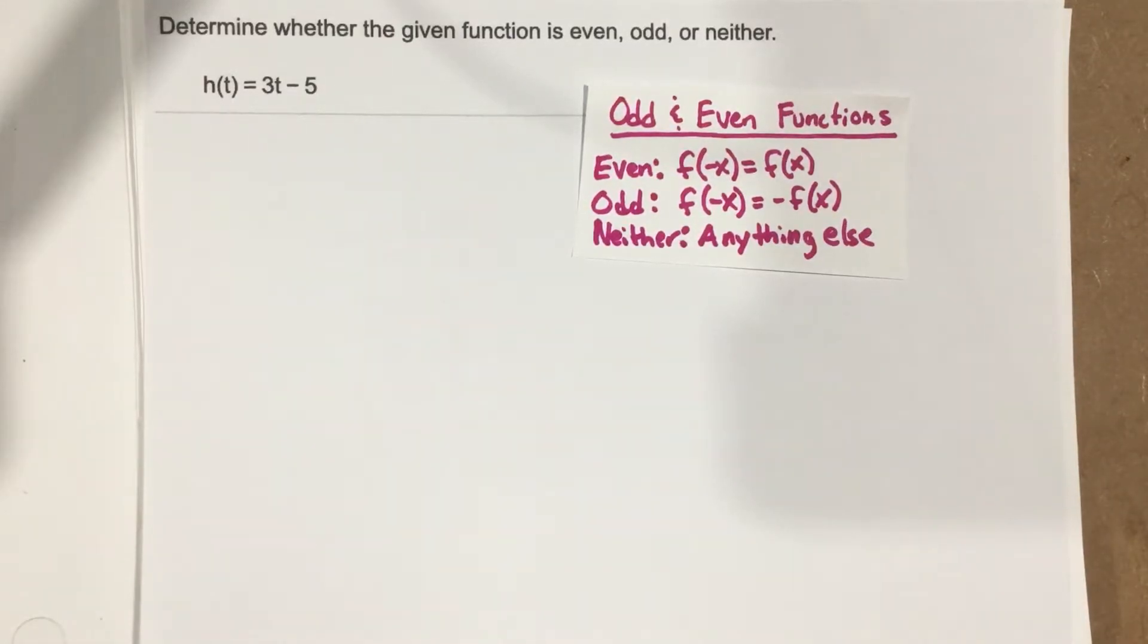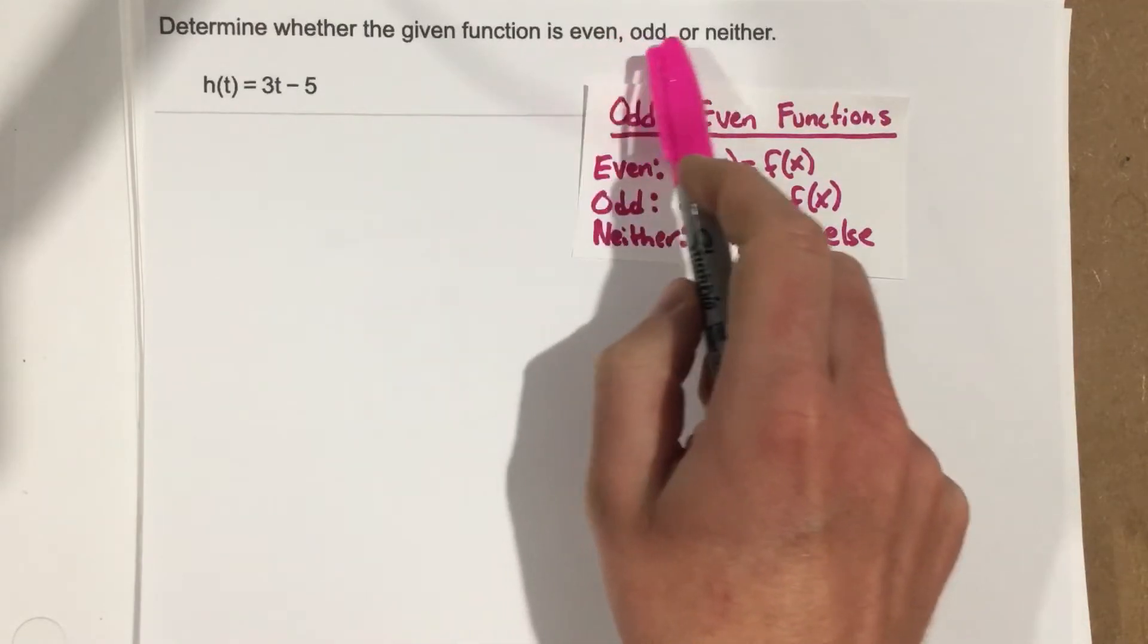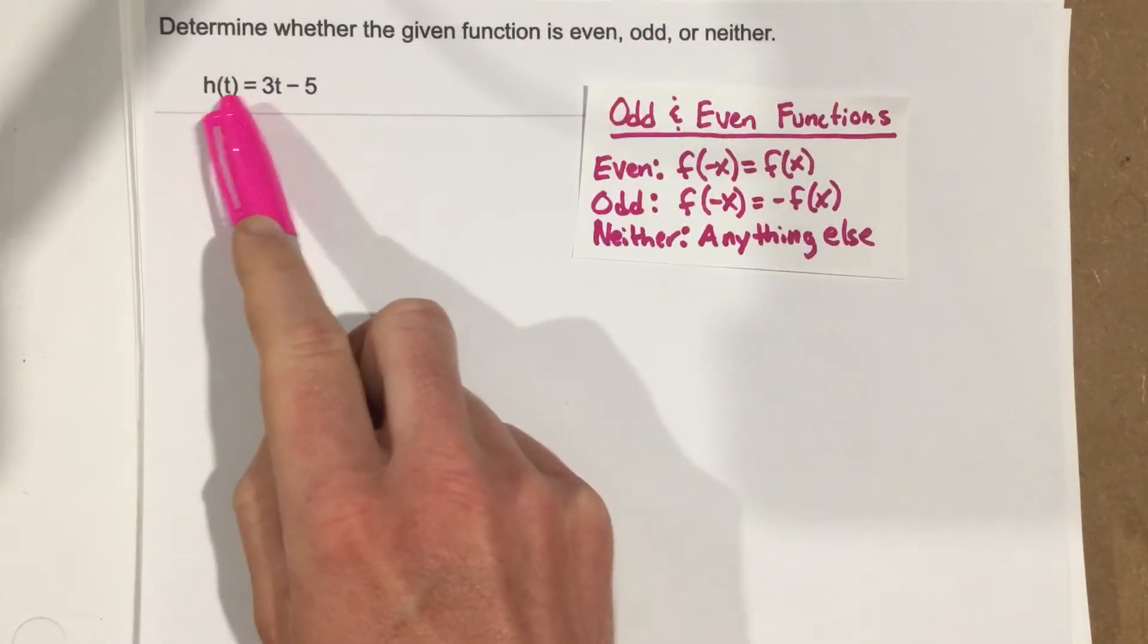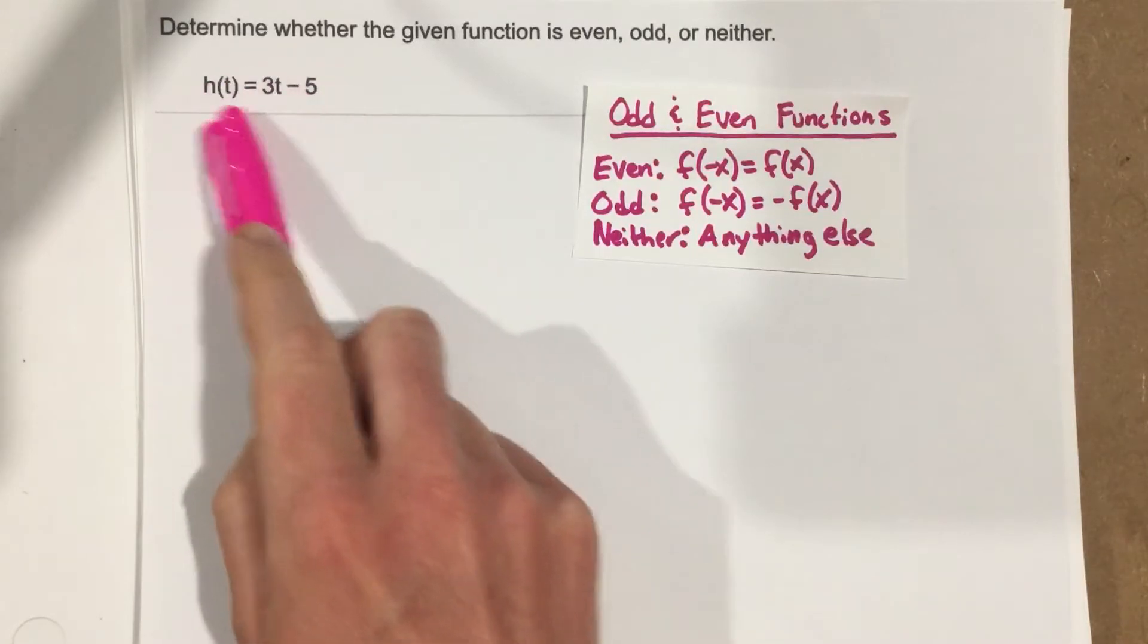This is problem number 7 from section 1.1. In this problem it says, determine whether the function is even, odd, or neither. And they give you the function h of t equals 3t minus 5, just a linear function here.